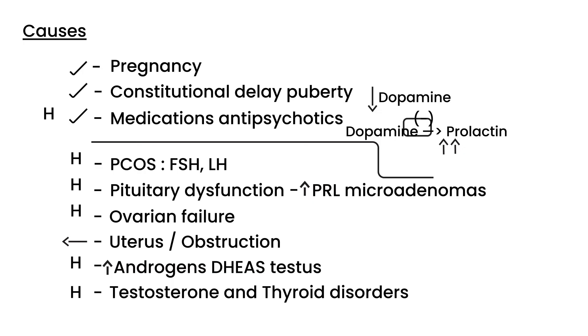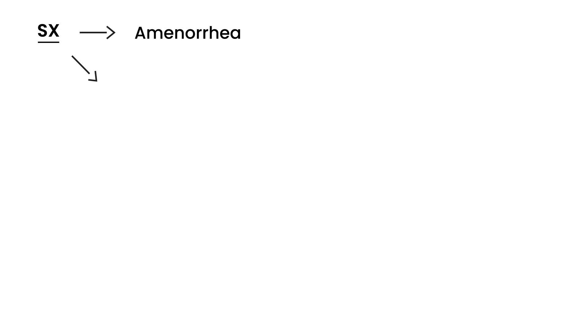Unlike most other disorders where we start with symptoms, the main symptom of amenorrhea is simply that the woman or teenage girl doesn't have any periods. But to narrow things down to a final answer, you look at other associated symptoms. Let me give you an introduction to how to approach this.